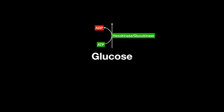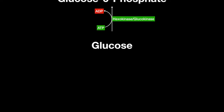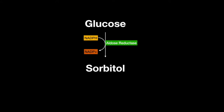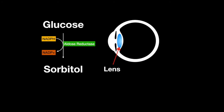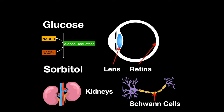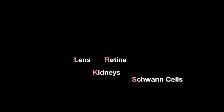Sorbitol is used as another way of metabolizing glucose. Instead of phosphorylating glucose into glucose-6-phosphate, it is reduced by aldolase reductase and NADPH to sorbitol. The lens of the eye has mostly just this enzyme, and the retina, kidneys, and Schwann cells have only this enzyme.